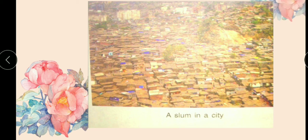Now, see children — this is a slum, a slum in a city. What is a slum? Huts can also be found in slums in cities. They are made of bricks, tin, or polythene sheets. In big cities like Mumbai, Delhi, Kolkata, poor people live in slums.